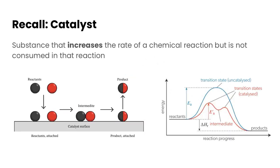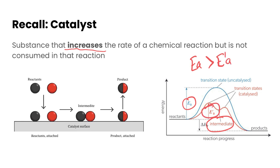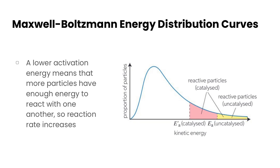We can also look at this through the impact of a catalyst. A catalyst is a substance that increases the rate of reaction but is not consumed in that reaction, and typically you get intermediates when using a catalyst, which is different from a transition state. In this case the activation energy for the uncatalyzed reaction is going to be much greater than the activation energy for the catalyzed reaction. If we look at a Maxwell-Boltzmann energy distribution curve for this, we're not changing the temperature, so the distribution of kinetic energies of the particles doesn't actually change.